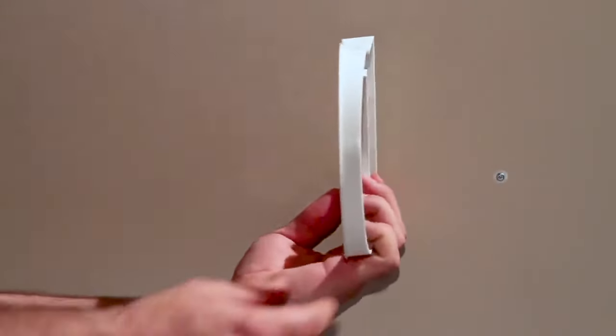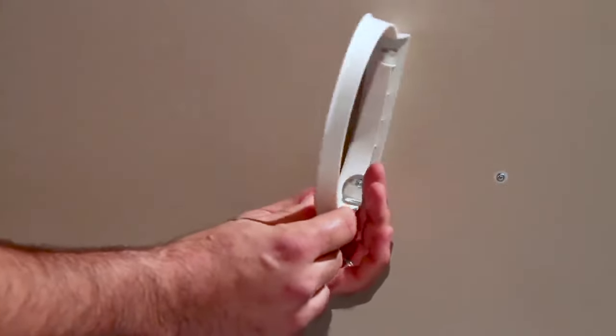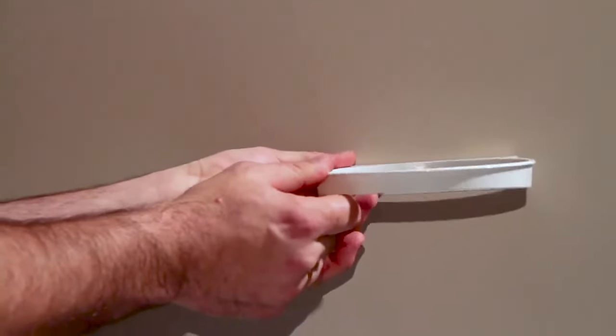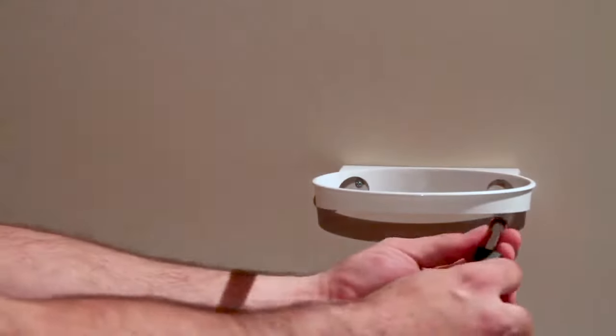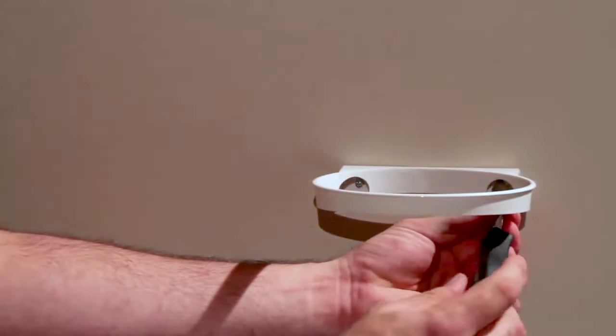If using the mounting ring, attach it to the wall by first locating a stud behind the drywall or directly to drywall using drywall plugs and screws. Wall mounting fasteners are not included with this kit.